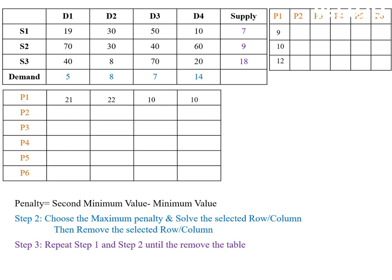Among these penalties, the maximum value is 22 for the D2 column. In D2 column, we choose the minimum value, which is 8. For the value 8, observe the total supply and total demand — the demand is 8 and the supply is 18. Allocate 8 here, then 8 minus 8 equals 0 and 18 minus 8 equals 10. We get 0 for D2 column, so remove the D2 column.